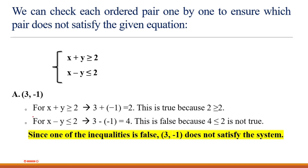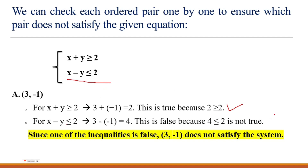Let me summarize. For option A, x equals 3 and y equals -1. Checking: 3 plus (-1) equals 2, which is greater than or equal to 2 — true. But for the second inequality, x minus y: 3 minus (-1) equals 4. Since 4 is not less than or equal to 2, this is wrong. Therefore, the correct answer for this question is A.